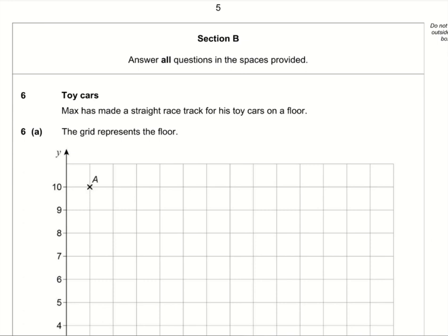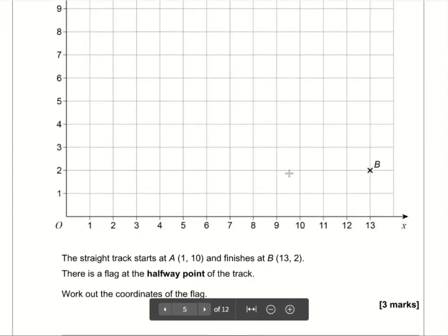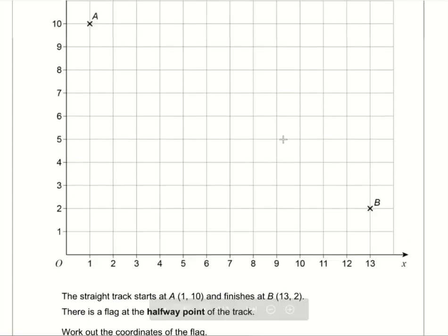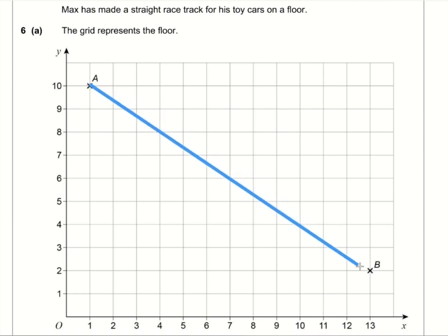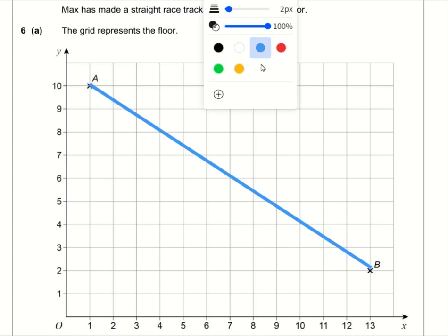Moving on to section B, question six. Max has made a straight racetrack for his toy cars on the floor. The grid represents the floor. We've got A marked and B marked. So the straight track starts at A and finishes at B. There's a flag at the halfway point. And we want to work out the coordinates of the flag. So what you need to do is draw a straight line using a pencil and ruler from A to B. And we just need to work out the halfway point.